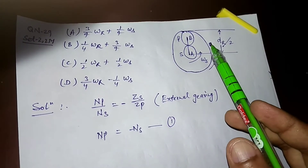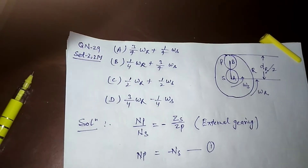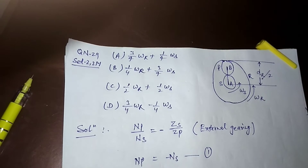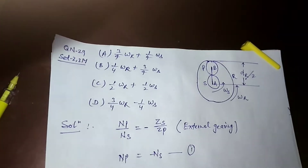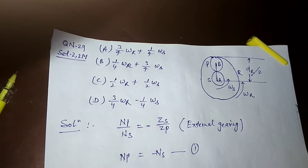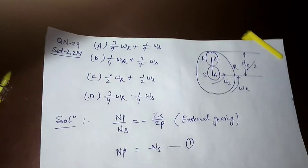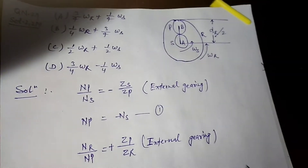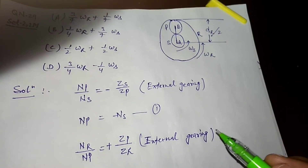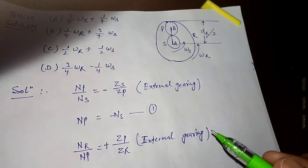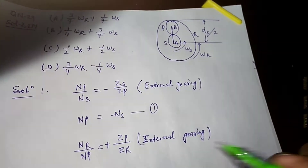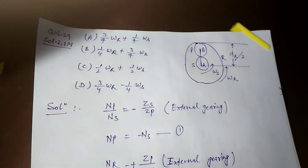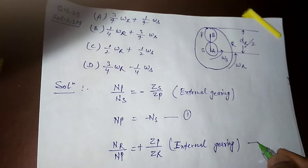For the planet gear and ring gear, we write NR/NP = Zp/Zr with a positive sign, because this is internal gearing. In internal gearing, when one gear rotates clockwise, the other also rotates in the same clockwise direction, so a plus sign is used. This is equation 2.